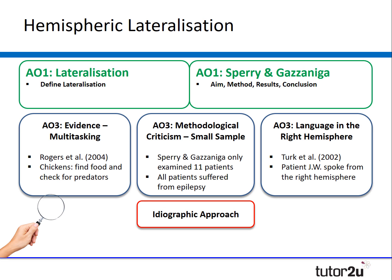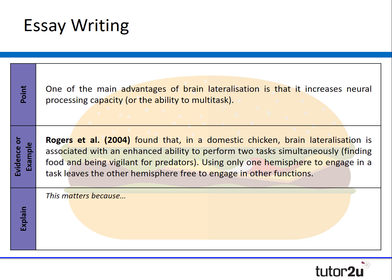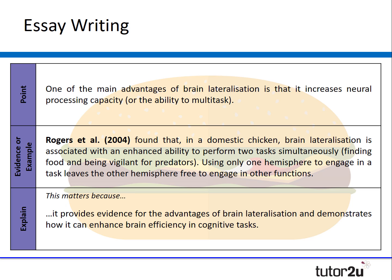We now need to take each AO3 point in turn. Starting with multitasking: one of the main advantages of brain lateralisation is that it increases our neural processing capacity — in other words, the ability to multitask. Rogers found that in domestic chickens, brain lateralisation is associated with an enhanced ability to perform two tasks simultaneously; for example, the chickens could find food while being vigilant for predators. Using only one hemisphere to engage in a task leaves the other hemisphere free for other functions. This matters because it provides evidence for the advantages of brain lateralisation and demonstrates how it can enhance brain efficiency for cognitive tasks.